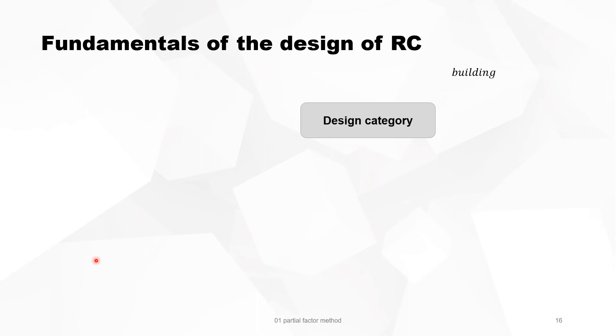I will give you an example now to have more feeling about the fundamentals of the design method. Take just a building in design category 4. The design working life is 50 years, the reliability class is 2, the consequence class is 2, and so the probability of failure is 2.9 times 10 to the minus 4.